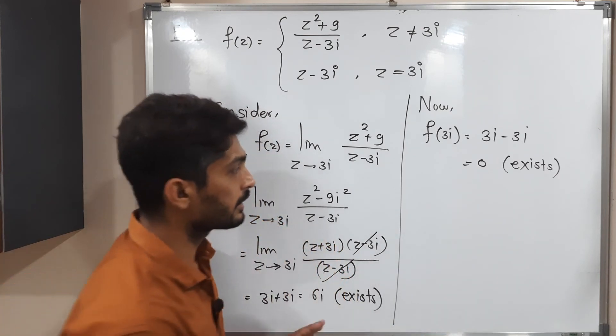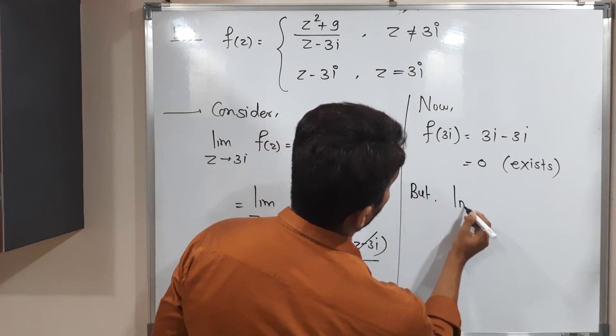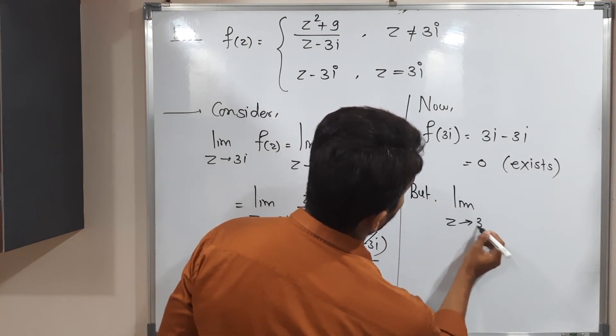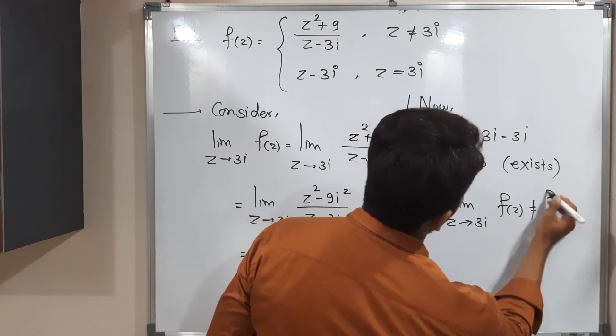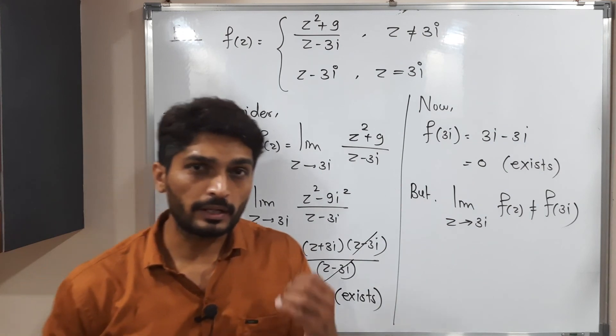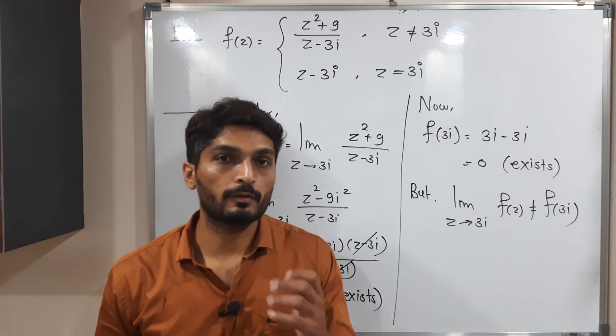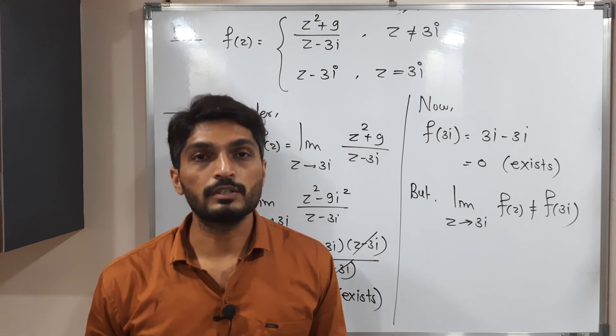So therefore, third condition is not satisfied. I need to mention here. But limit z tends to 3i, f of z is not equal to f of 3i. So the third and very important condition that is not satisfied.